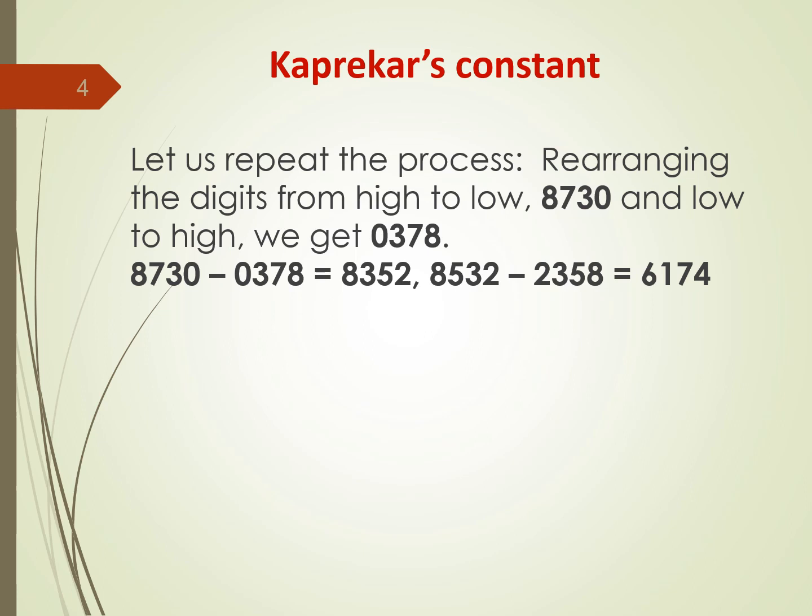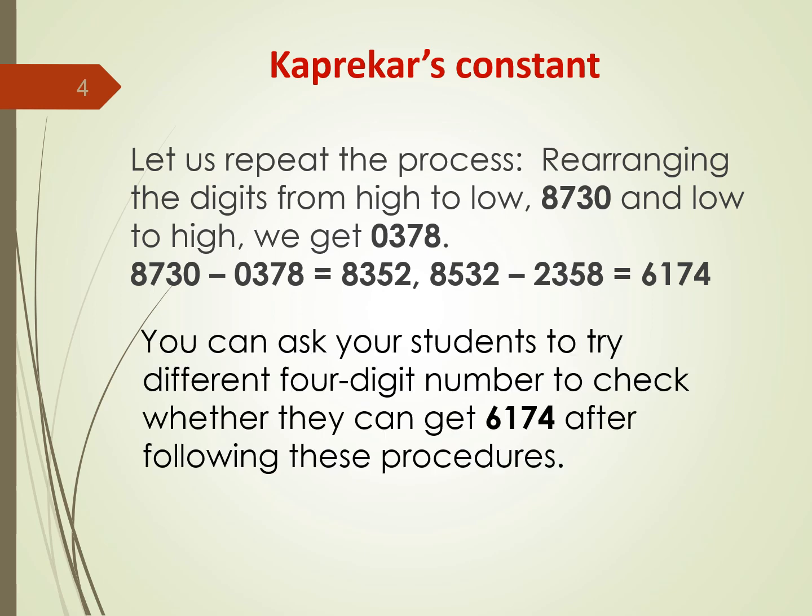Continuing the process, we rearrange from high to low and get 8,532. Low to high gives us 2,358. When we subtract the lower value from the higher value, we get the magic number, 6,174. You can ask your students to try different 4-digit numbers to check whether they always get 6,174 after following these procedures.